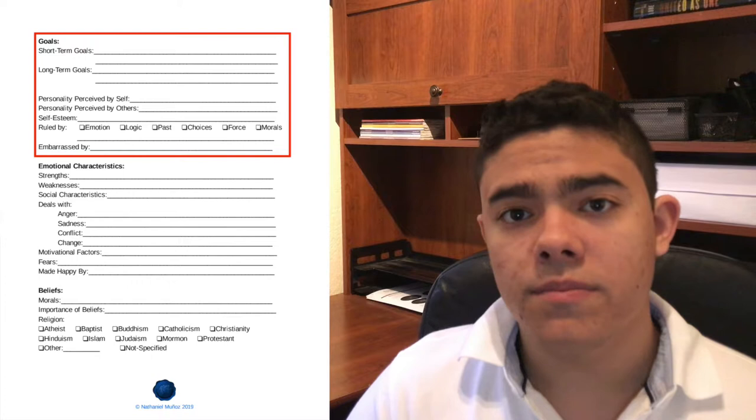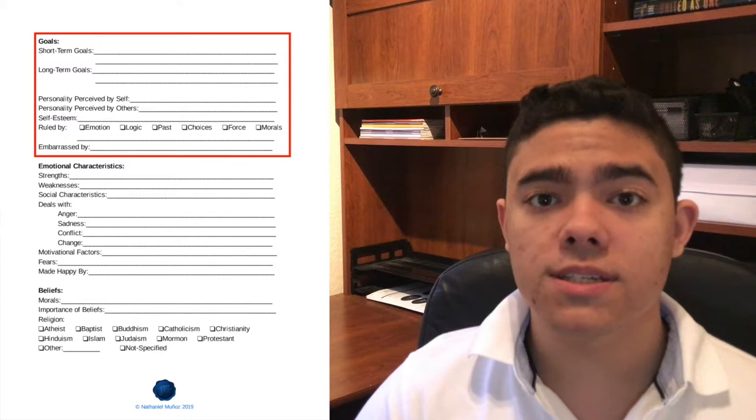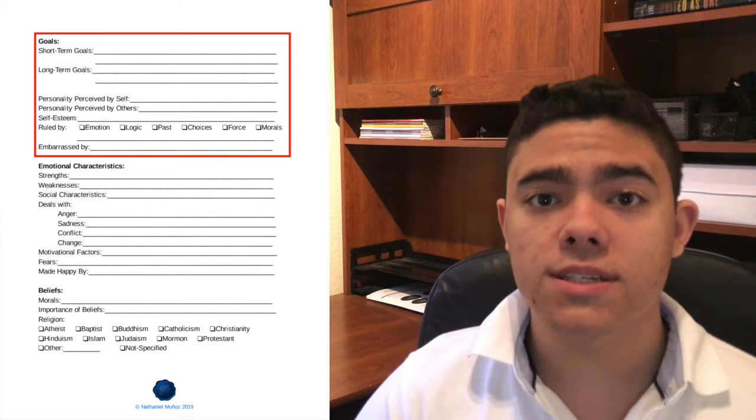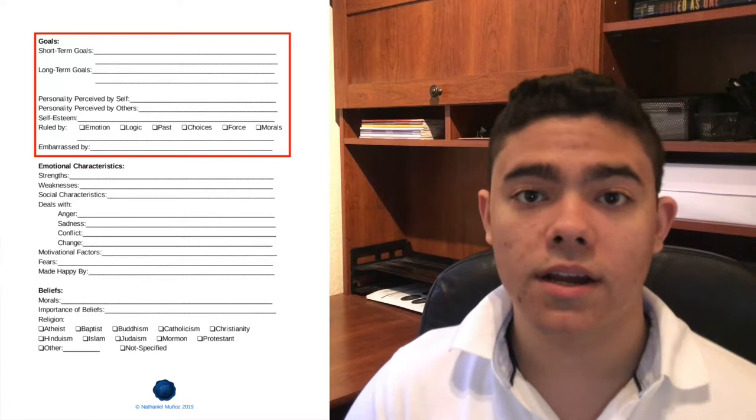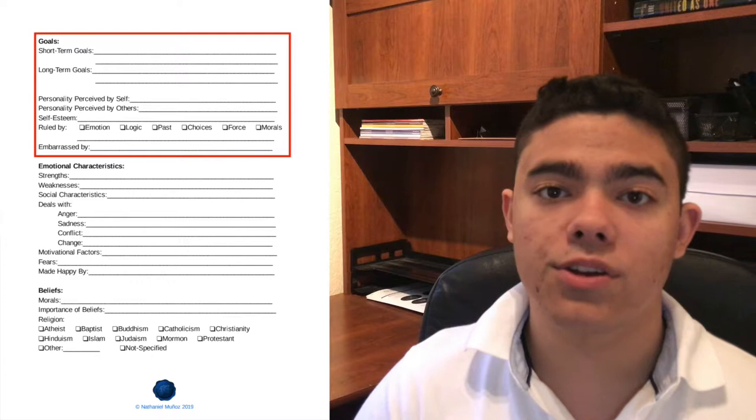The next two, we have self-esteem and ruled by. I'm going to go into these individually, because both of them play a very important role. What is the self-esteem of your character? Your self-esteem is the emotional mindset of your character in relation to himself. How do they perceive themselves emotionally? Do they hold themselves to a high regard or not? When writing your self-esteem of your character, you want to make sure that this is portrayed in how you write your character and how you develop your character. If your character has a high self-esteem, make sure you show it off.